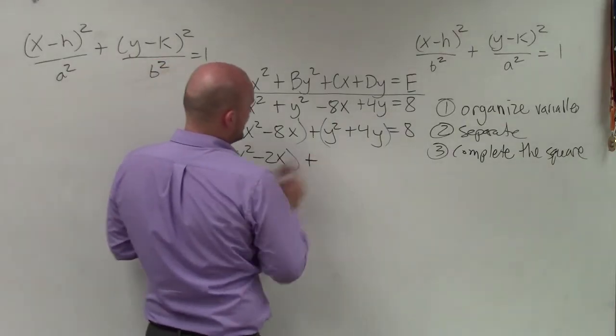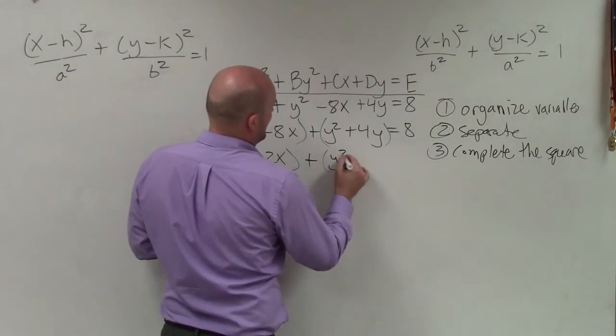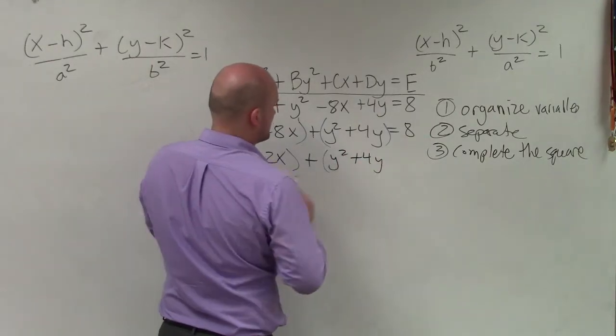Here, I'm looking pretty good, right? So I'm just going to rewrite this one. y² + 4y equals 8.